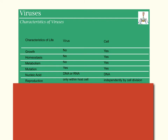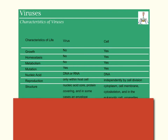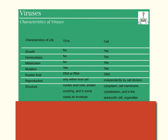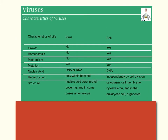Reproduction: cells reproduce independently by cell division, which we learned. Viruses, however, need a host cell. Structure: viruses have a nucleic acid core and basically proteins covering them, and in some cases an envelope. In a cell, we have all of our organelles. So there are some major differences between a cell and a virus that I want you to understand.